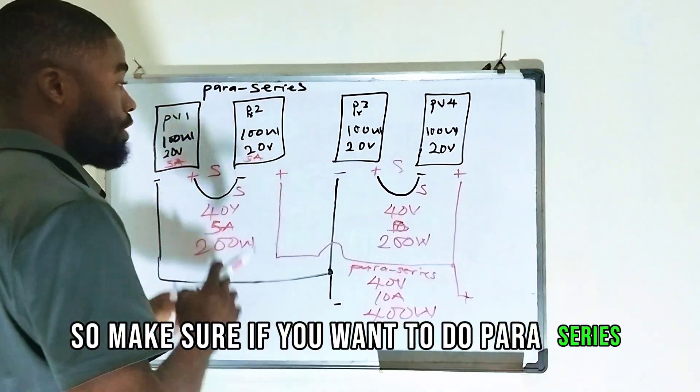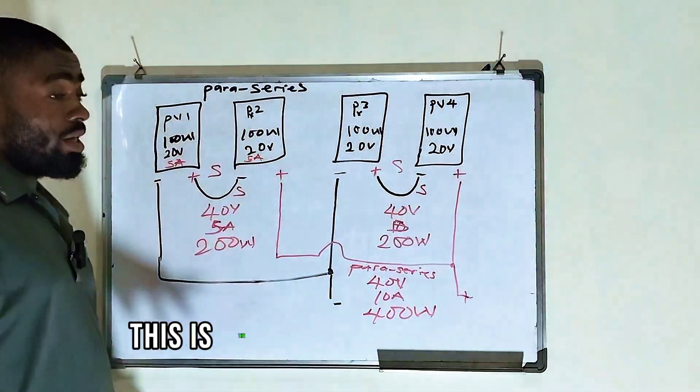Maybe like 3 or like 5. That's why most installers will tell you you can't use 5 panels. So make sure if you want to do Paraseries, each panel have partner. This is the Paraseries.